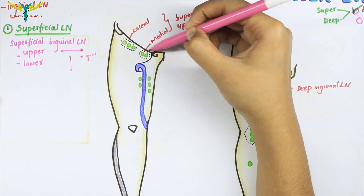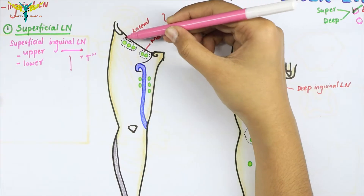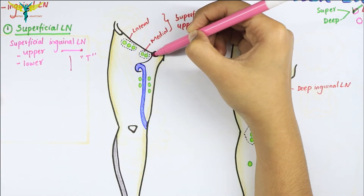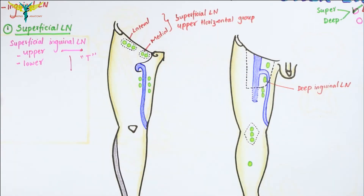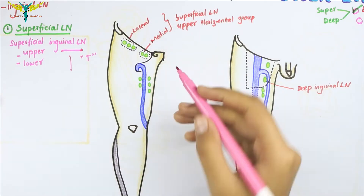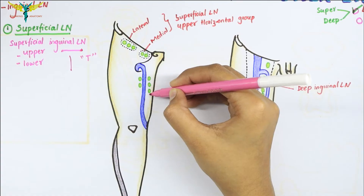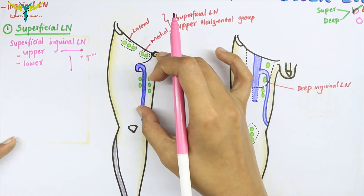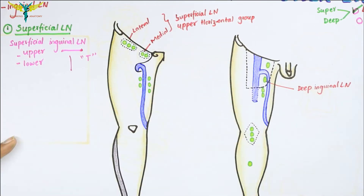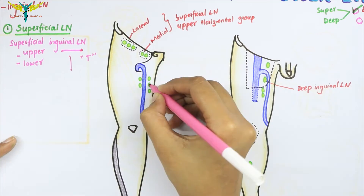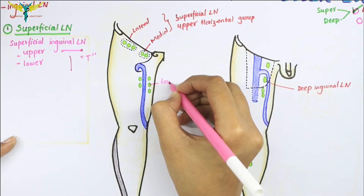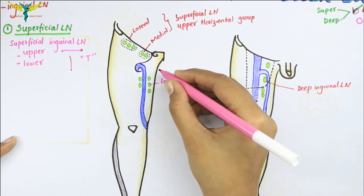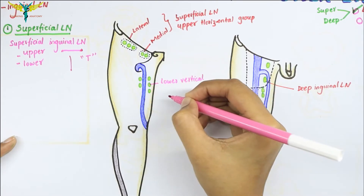In this diagram, this group is the upper group or the upper horizontal group of superficial inguinal lymph nodes. And this group of lymph nodes is the lower vertical group of superficial inguinal lymph nodes, which are vertically arranged.